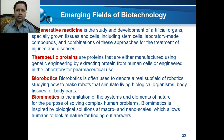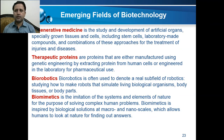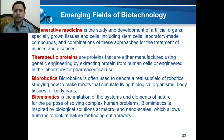Regenerative medicine is the study and development of artificial organs, especially grown tissues and cells including stem cells, laboratory compounds, and combinations of these approaches for the treatment of injuries and diseases. Another emerging field is therapeutic proteins — proteins that are either manufactured using genetic engineering or extracted from human cells and engineered in the laboratory for pharmaceutical use. Biorobotics is also an emerging field, studying how to make robots that simulate living biological organisms, body tissues, or body parts.